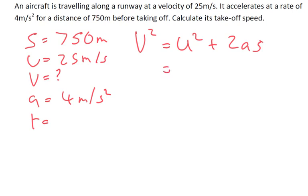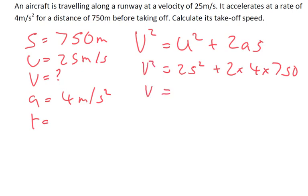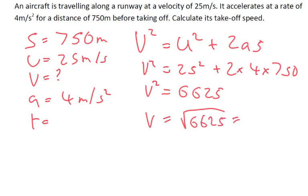So let's use v squared equals u squared plus 2as. So u squared is 25 squared, plus 2 times 4 times 750. I find that v squared is equal to 6,625. Then v is going to be the square root of 6,625, and I get 81.9 meters per second.